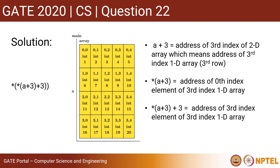So `*(a+3)` is the address of the 0th element of row 3. Then `*(a+3)+1` is the next element, `*(a+3)+2` is the one after, and `*(a+3)+3` is the address of the 3rd index element in row 3. So `*(a+3)+3` denotes the address of the element at the 3rd index of the 3rd row.